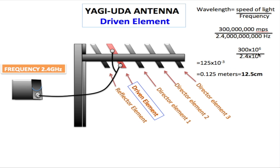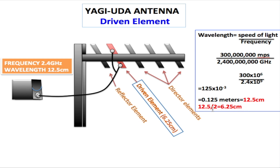Moving the decimal point three places gives us 0.125 meters, which equals 12.5 centimeters. So our wavelength at 2.4 GHz is 12.5 centimeters. However, the driven element, which is a dipole antenna, operates at half the wavelength. So we divide 12.5 by 2, which equals 6.25 centimeters. That is the length of the driven element — 6.25 centimeters.